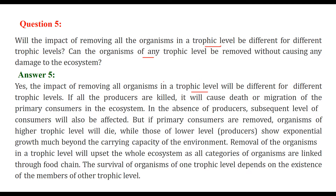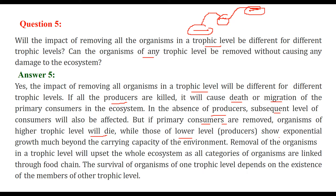If the producers are killed, it will cause death or migration of the next level — the primary consumers — and subsequently all higher consumers will also be affected. If primary consumers are removed, higher trophic level organisms die because they have nothing to eat, while the lower level shows exponential growth beyond the environment's capacity. Removal of organisms at any trophic level will upset the whole ecosystem, as all categories of organisms are linked through the food chain.